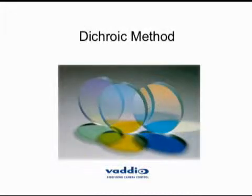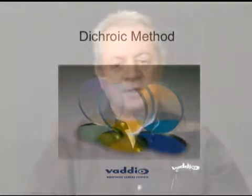The dichroic mirror, or dichroic filter, indicated on this slide, illustrates how light gets separated into the three basic components for later reconstruction of the original colors.